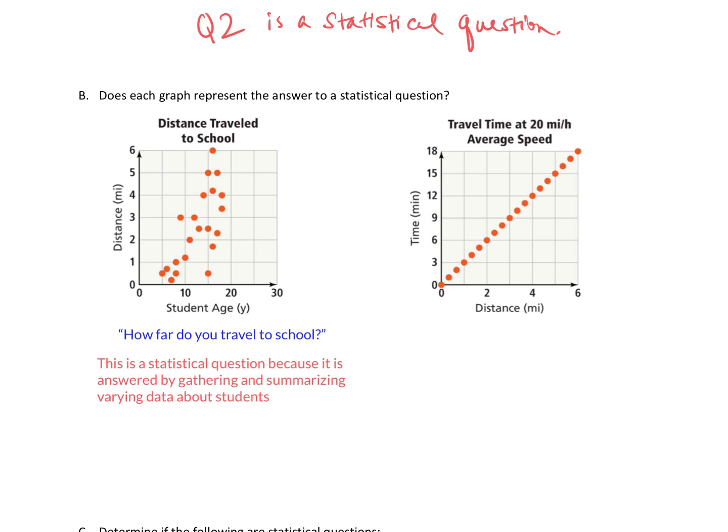Okay, our next graph, if we take a look at what we're looking at here, the title of our graph is travel time at 20 miles per hour average speed. So we can see that we're tracking how long it takes to travel a specific distance, however many miles. And we also know that we're going at 20 miles per hour. So the question that's being asked, that is producing these answers is, how long does it take to travel x miles at 20 miles per hour?